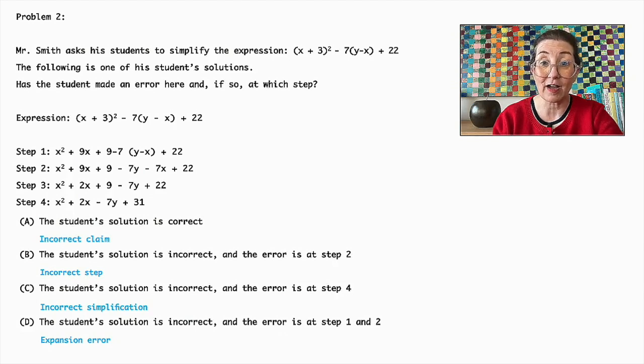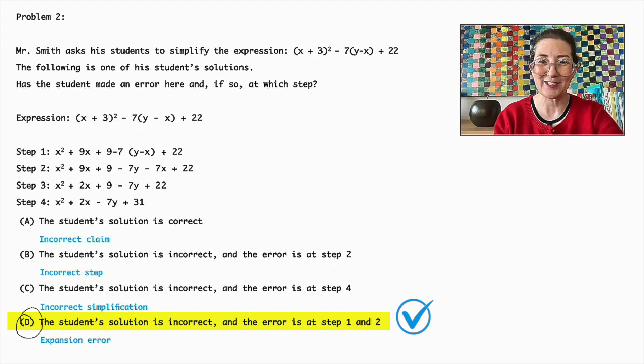Correctly simplifying the expression should involve the correct expansion of (x + 3)². So D is the correct answer here.